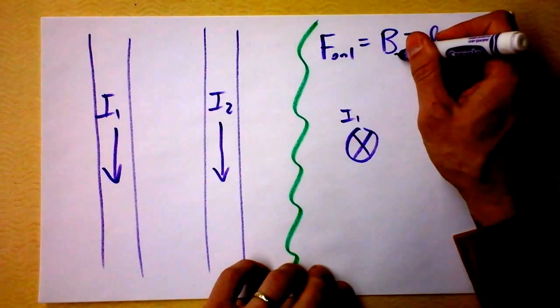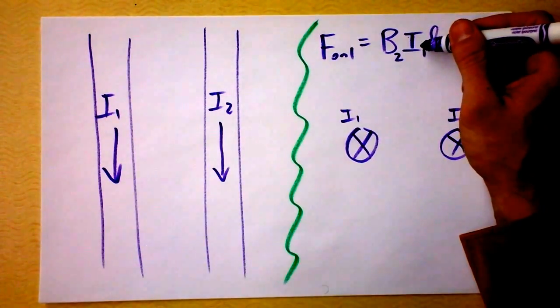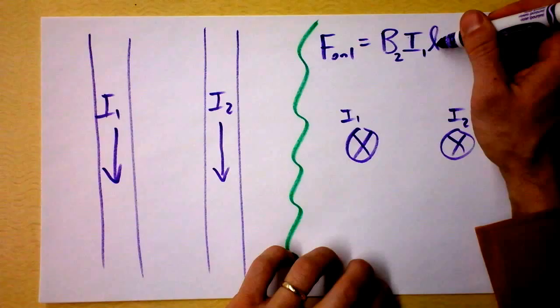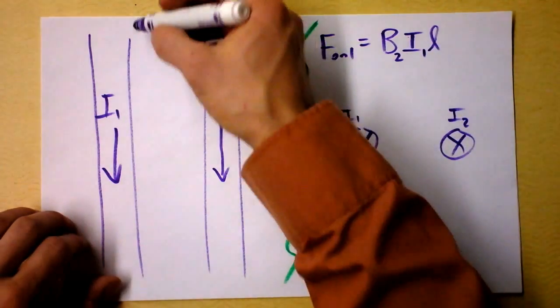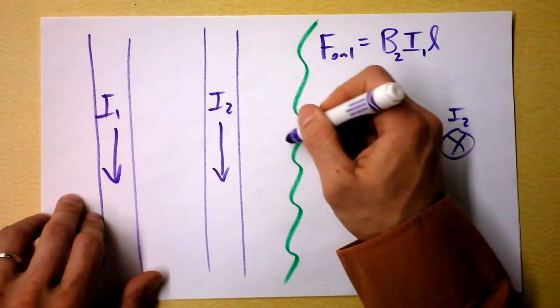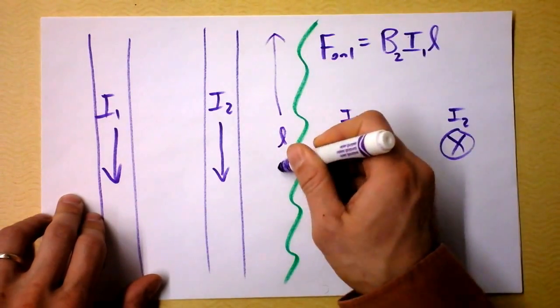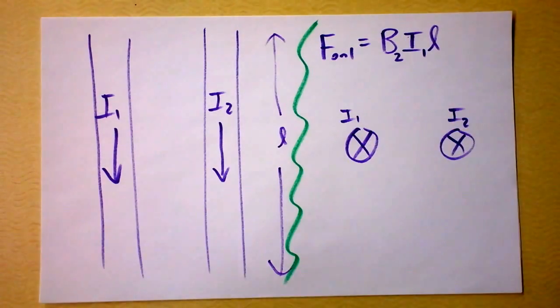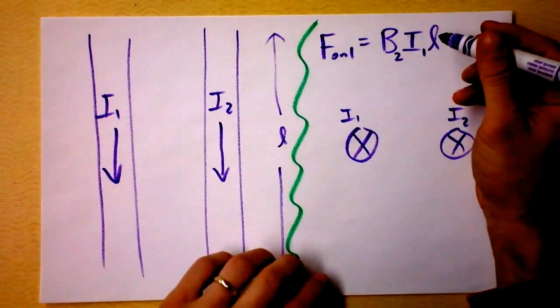So I'm going to say the field of 2 times the current in 1 times the length that they are parallel. That's this length right here. So that's how L is going to come into it. That's going to be something that we just take to be known for us.